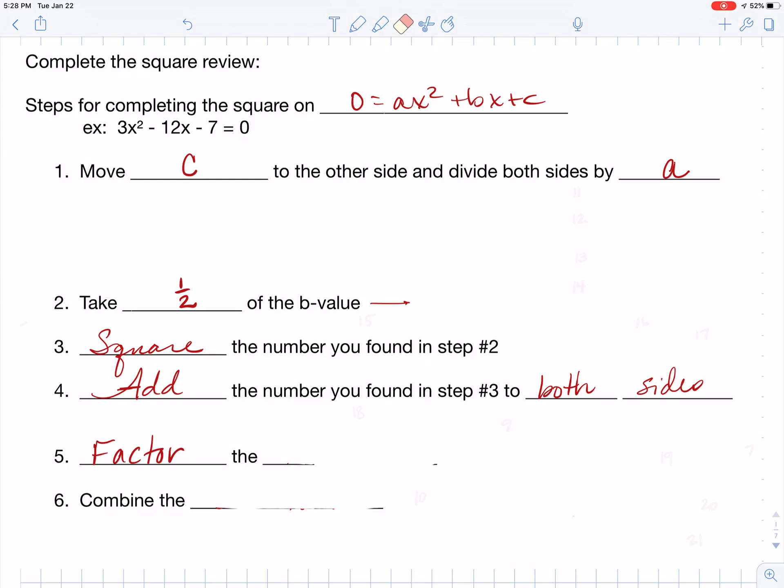Then after you add to both sides, you want to factor your trinomial. After you've factored your trinomial, combine your constants. Now, let's go back and do an example by following each of these steps.